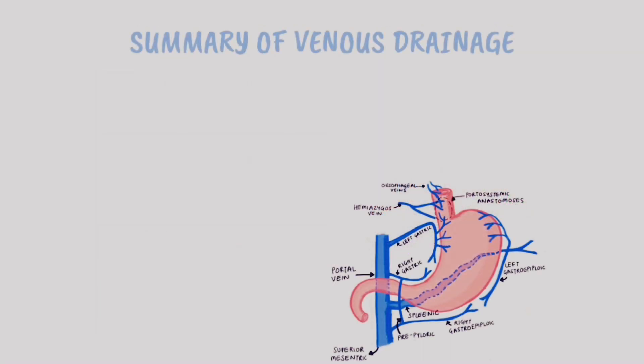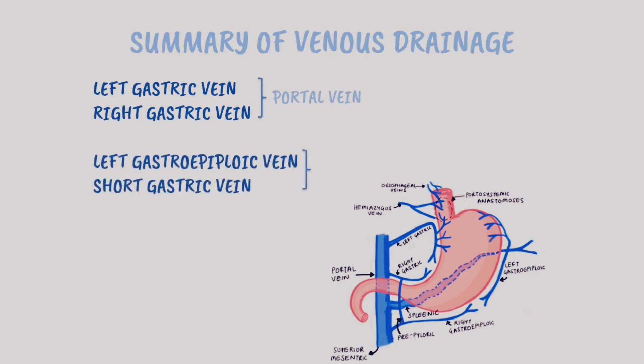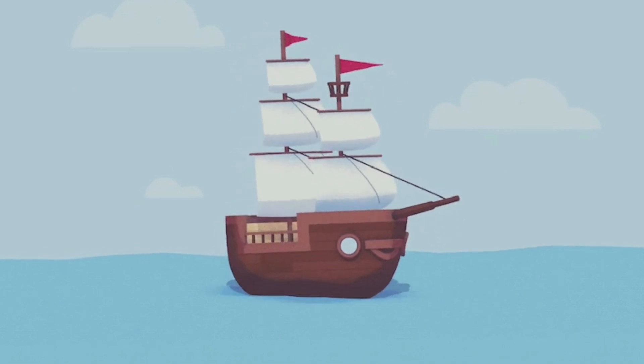So the venous drainage of the stomach can be summarized as: left and right gastric veins draining into the portal vein, short gastric and left gastroepiploic veins draining into the splenic vein, and right gastroepiploic vein draining into the superior mesenteric vein.